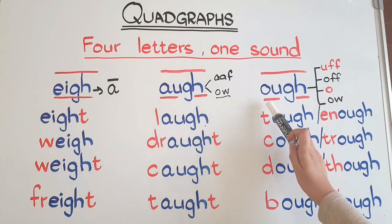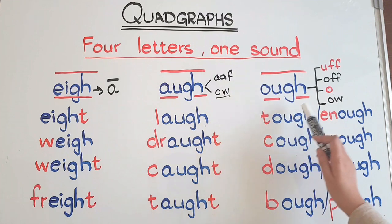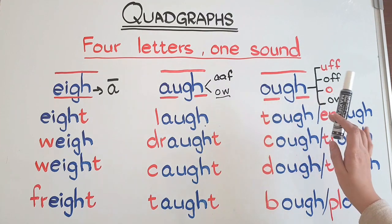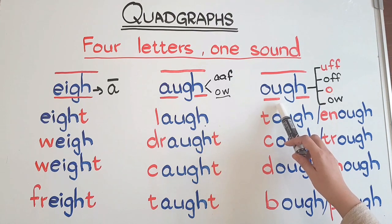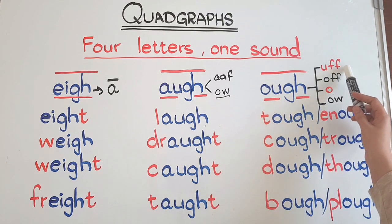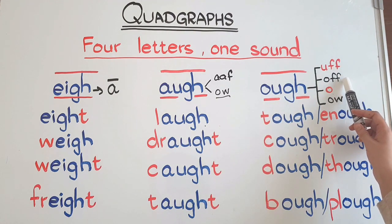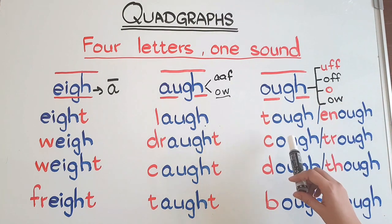Now O-U-G-H - when these letters are together, they make many different sounds. This is the most complicated quadgraph. Let's see the four sounds that are very common: uff, off, o, and ow.